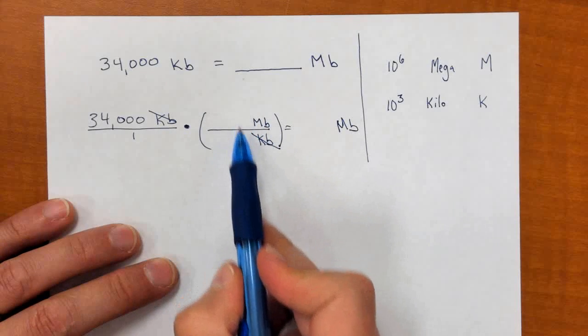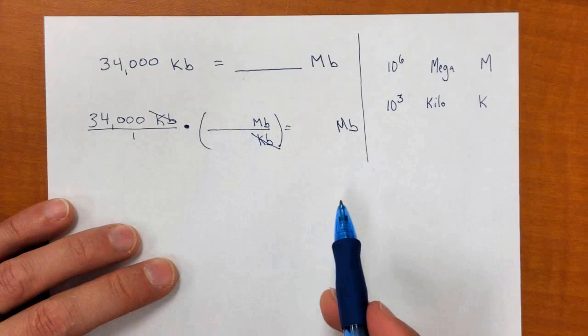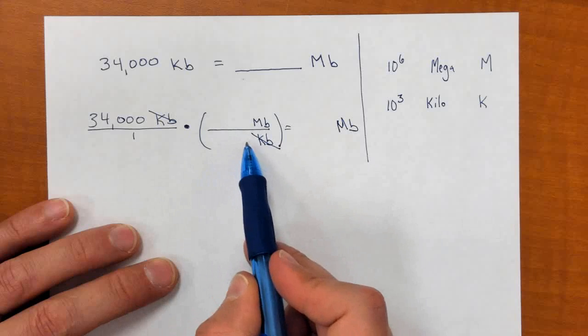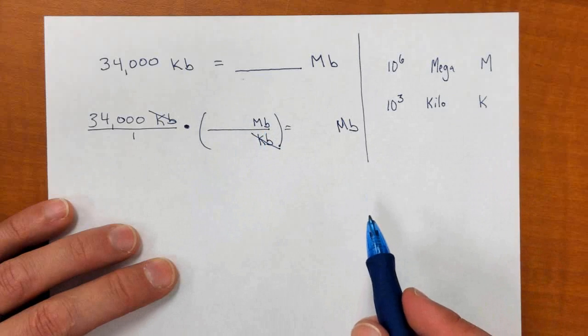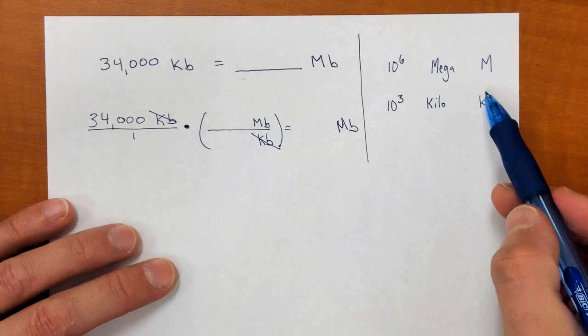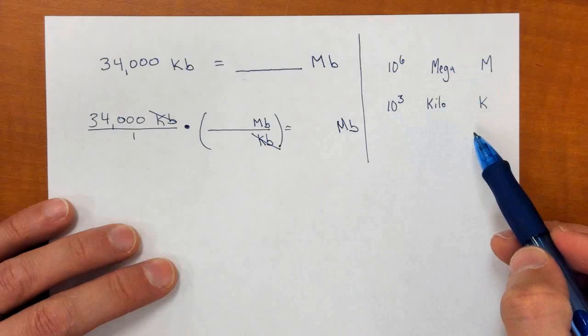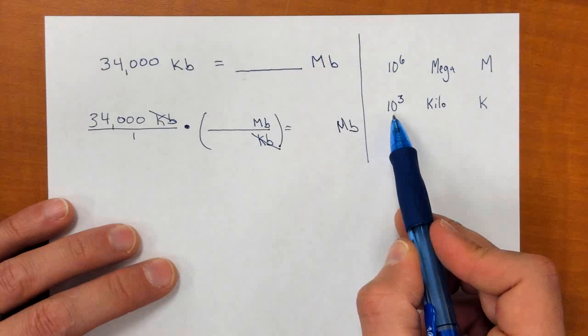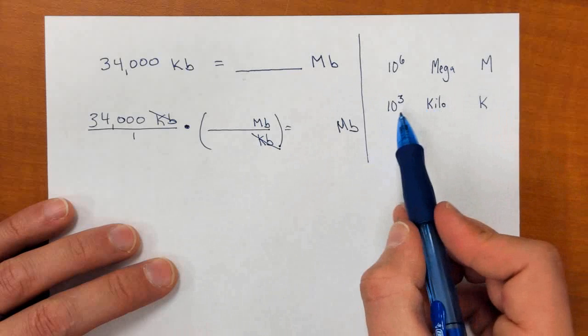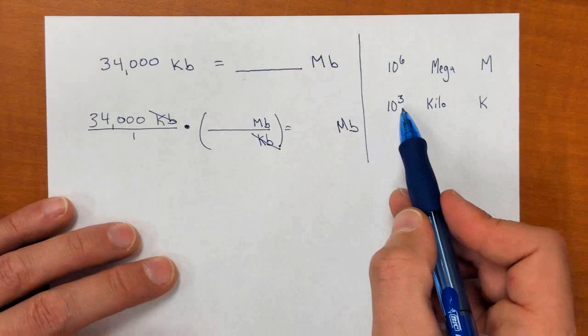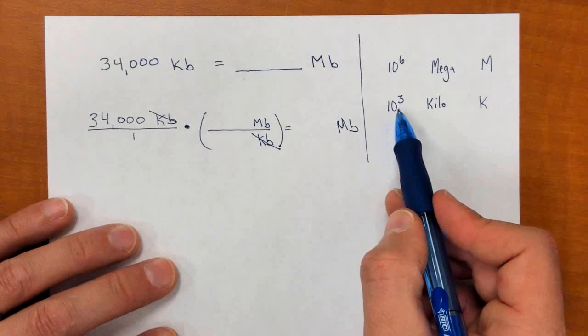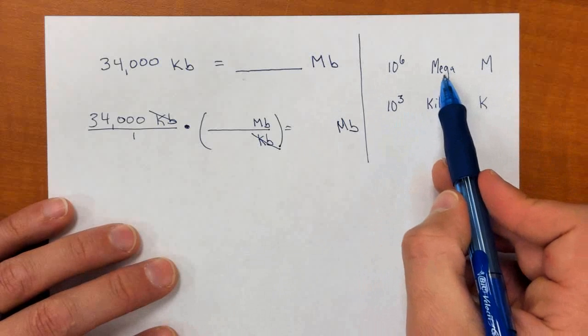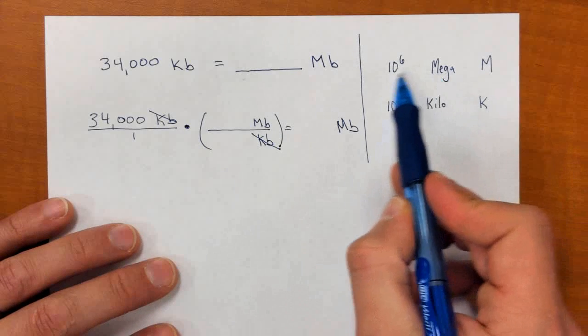Now, the numbers that go in here, we're going to figure that out by understanding the equivalency statement of how many megabytes equals how many kilobytes. On a table, we'd be able to see that the prefix kilo means ten to the third. So one kilo is ten to the third of a base unit, like bytes or meters or seconds. And one megabyte is ten to the sixth.